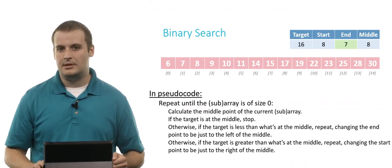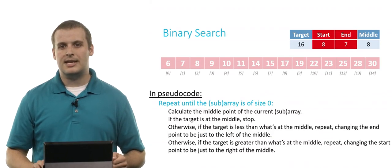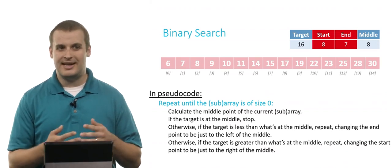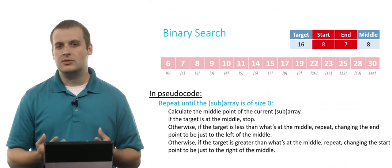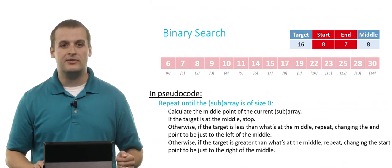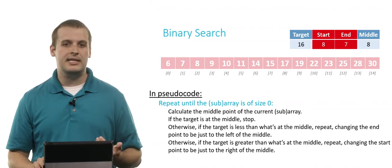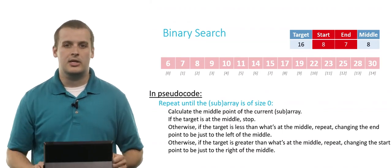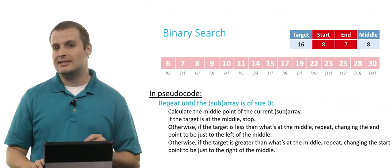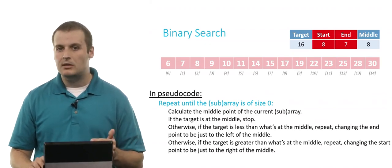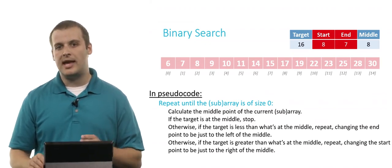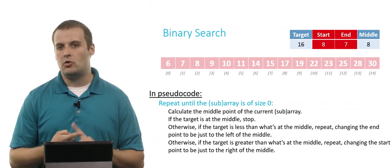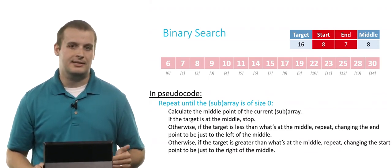Do you see what just happened? Start is now greater than end — the two ends of our array have crossed. The start point is now after the endpoint, which doesn't make sense. So we now have a subarray of size 0, and once we've reached this point we can guarantee that element 16 does not exist in the array. It's only when the start and end points cross — not merely equal — that we can guarantee the element does not exist.